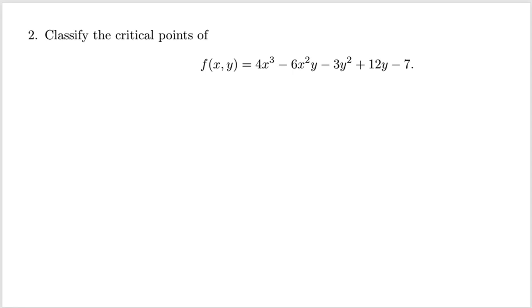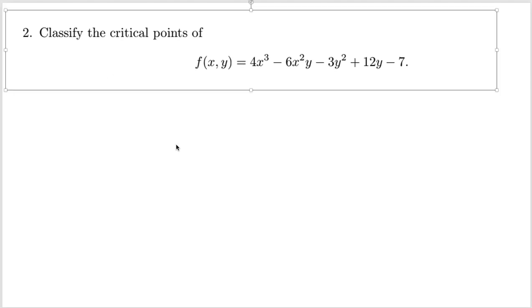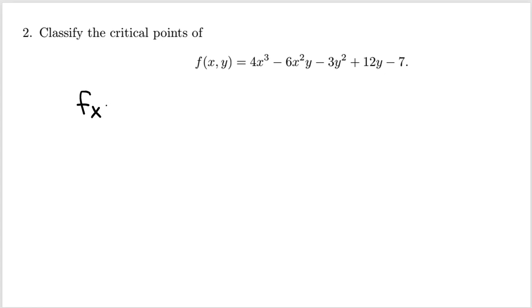Classify the critical points of this function. In Calc 1, critical points were where your first derivative was equal to 0 or undefined. In Calc 3, there's two first derivatives - the partial with respect to x and the partial with respect to y. They need to be equal to 0 simultaneously. Your partial with respect to x is 12x² - 12xy. Your partial with respect to y is -6x² - 6y + 12. These have to be equal to 0 simultaneously.